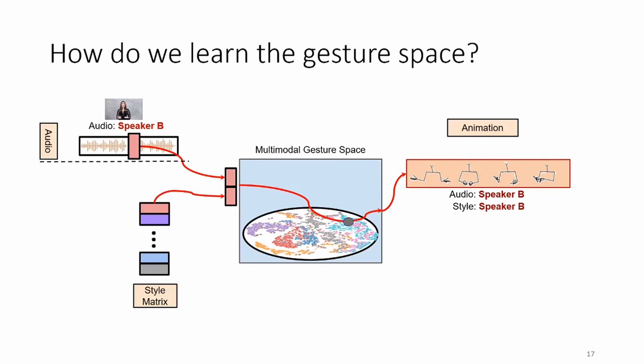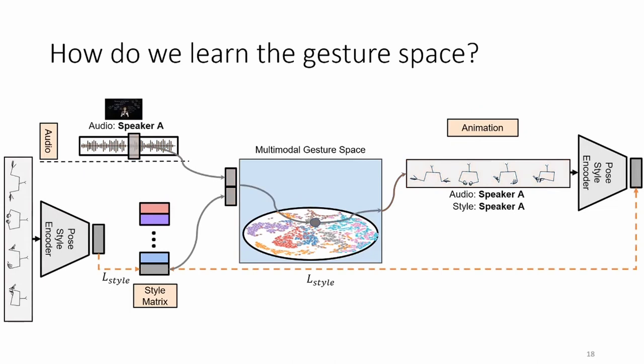To learn the gesture space, we use a consistency loss on the style vectors for both the ground truth and the generated gestures. We do the same for other speakers such as speaker A and so on. We refer the viewers to our paper for the complete description of the model and the optimization process.